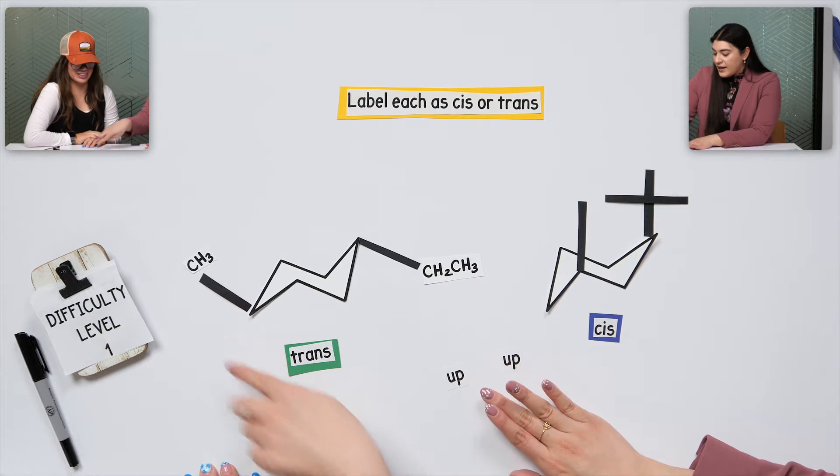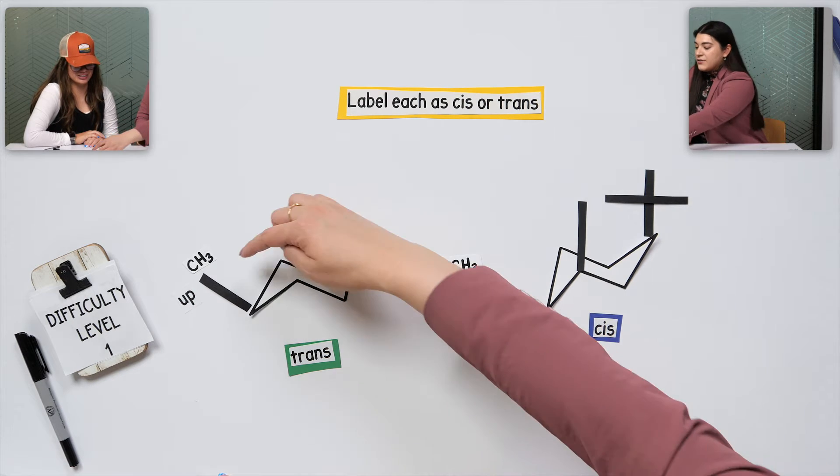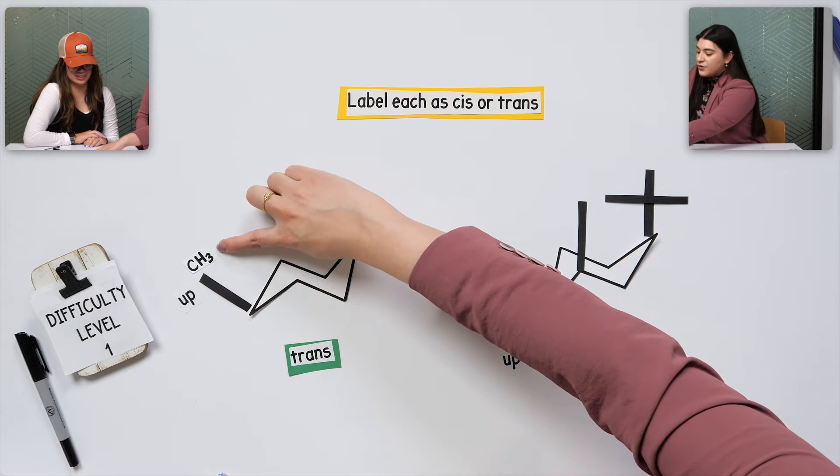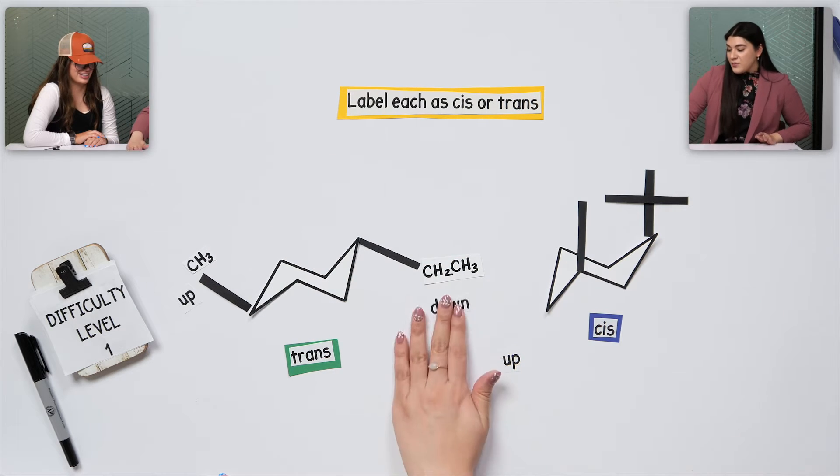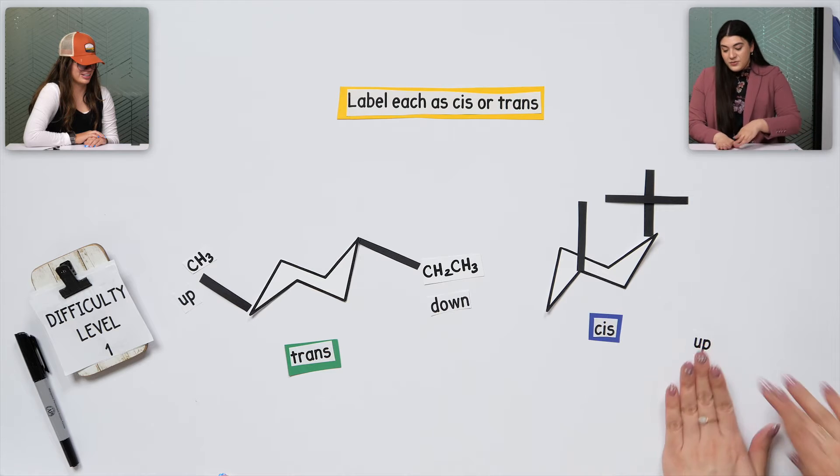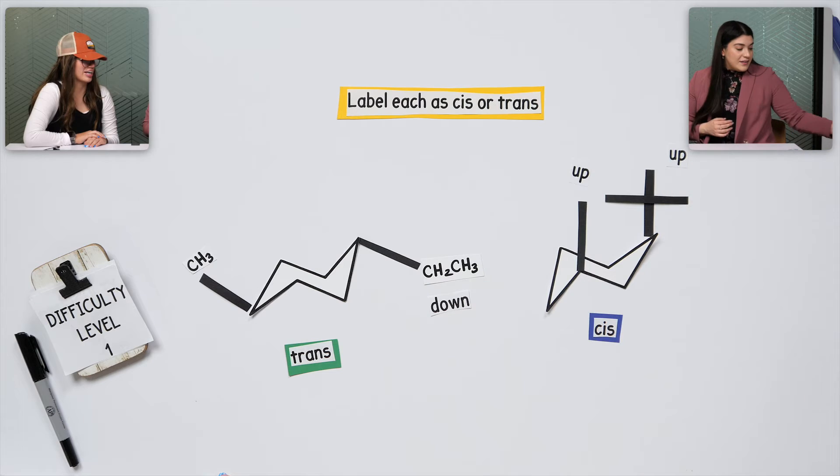You said that this is pointing up. Yep. We're really just following the direction of where this is headed, think of the arrowhead towards whatever is at the end. Yes. And then this is going down. They're opposite. That's trans. And then this one you said, they're both pointed up and up, which makes it cis. Exactly.